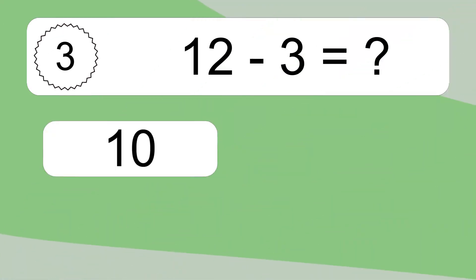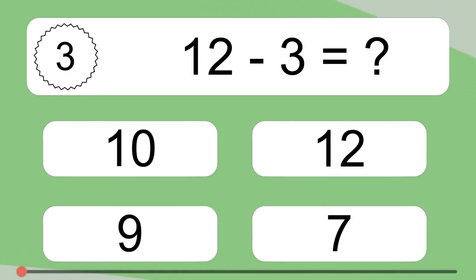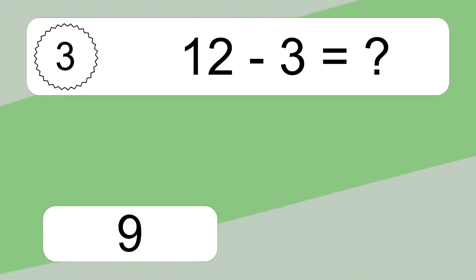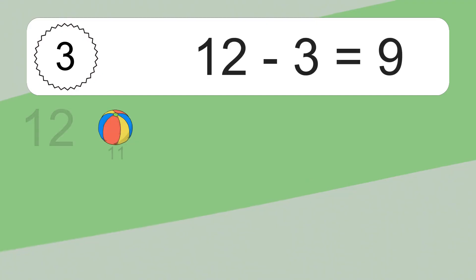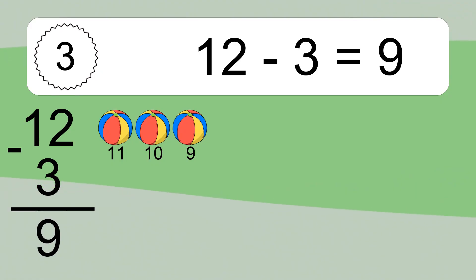12 minus 3 equals what? 12 minus 3 equals 9. Let's count it: 11, 10, 9.